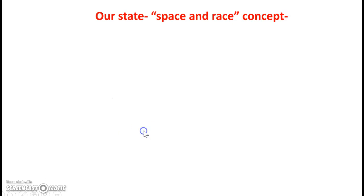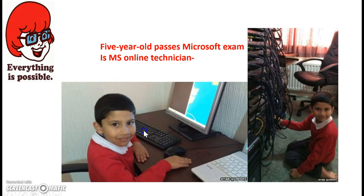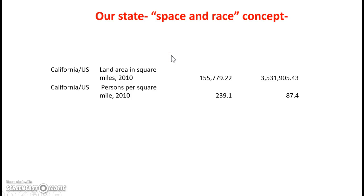I want to talk a little bit about this idea of space and race. One of two very interesting things about the United States is that we have, in one area, more ethnicities represented than anywhere else in the entire world. There are places with many different cultures and ethnicities cohabitating, but the United States is unrivaled in the amount we have.